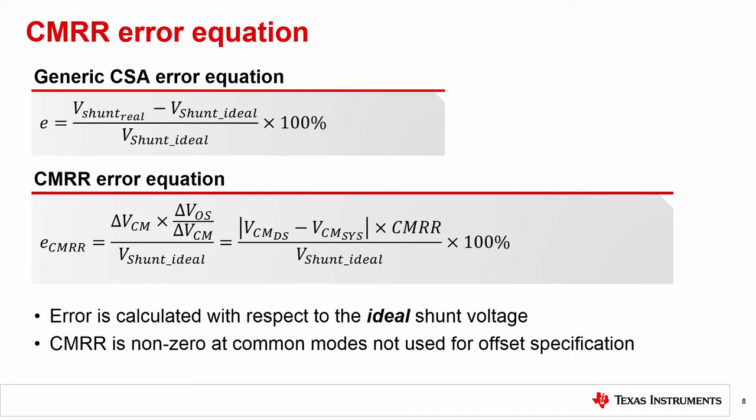As the error from the datasheet defined common mode is already included in the offset error calculation, the CMRR error will be centered around the offset defined common mode and will only be non-zero above or below that value, which is 12 volts for most devices.